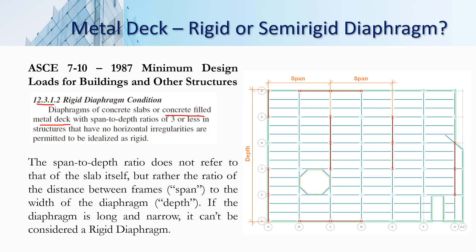Diaphragms of concrete slabs or concrete filled metal deck with span-to-depth ratios of 3 or less in structures that have no horizontal irregularities are permitted to be idealized as rigid. There are two conditions: first, the span-to-depth ratio should be equal to or less than 3, and second, there should be no horizontal irregularities. For now we do not have any irregularities in our building, so this condition is fulfilled.